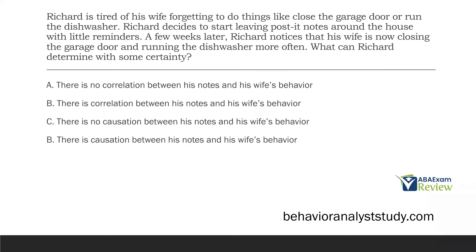Question four: Richard is tired of his wife forgetting to do things like close the garage door or run the dishwasher. Richard decides to start leaving post-it notes around the house with little reminders. A few weeks later, Richard notices that his wife is now closing the garage door and running the dishwasher more often. What can Richard determine with some certainty? Until we see experimental control, there's not a whole lot we can truly determine. He added a variable — the post-it notes — but hasn't done an experiment.